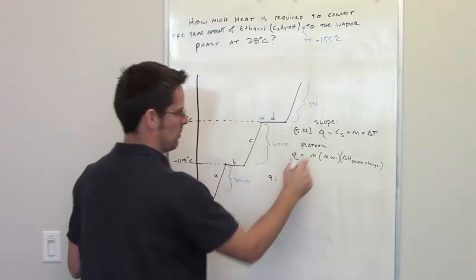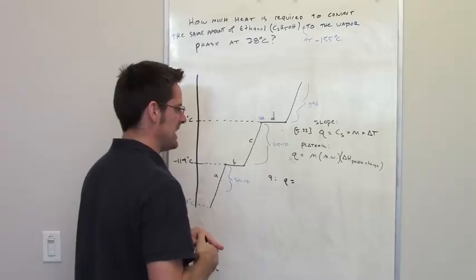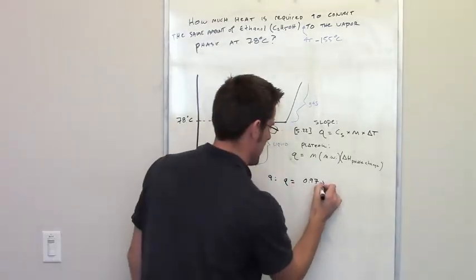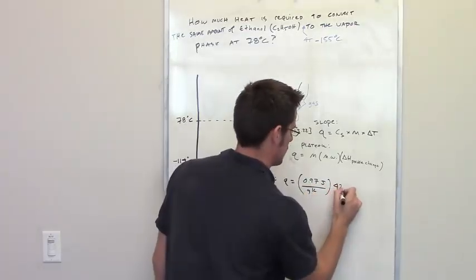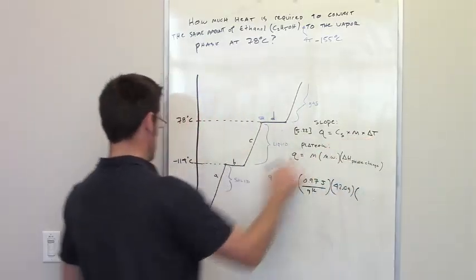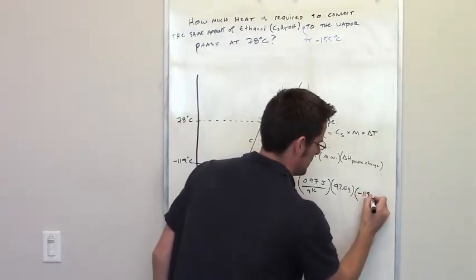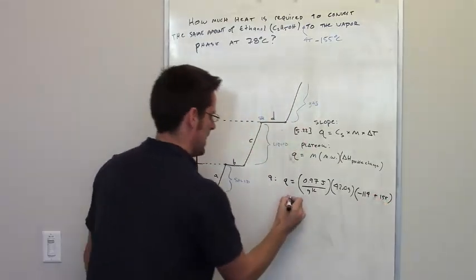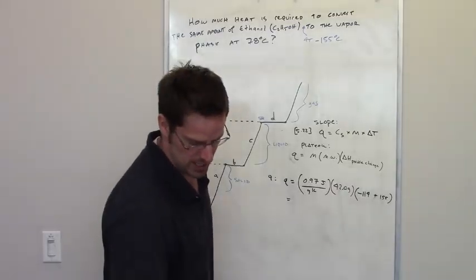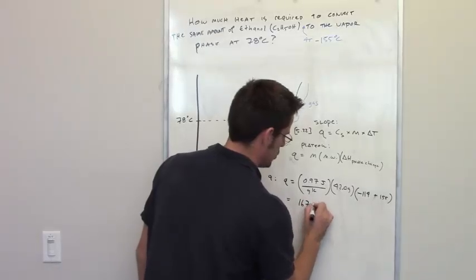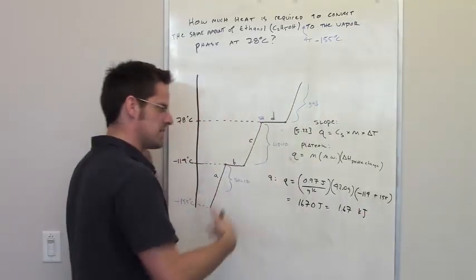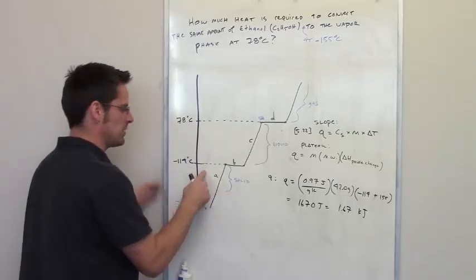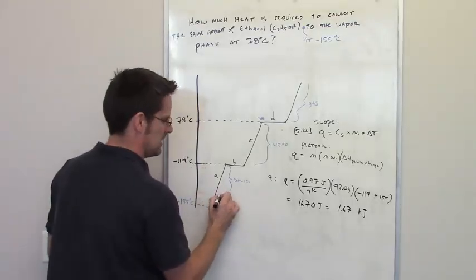Starting with slope A: Q equals the specific heat of solid ethanol, which is 0.97 joules per gram kelvin, multiplied by 42 grams, multiplied by delta T of negative 114 minus negative 155, which equals positive 41. That gives a final answer of 1,670 joules, or 1.67 kilojoules.